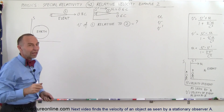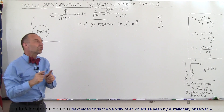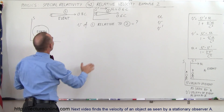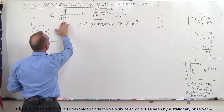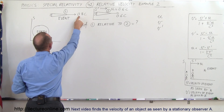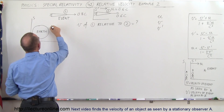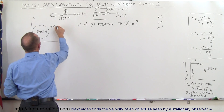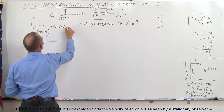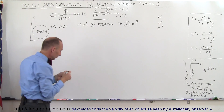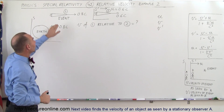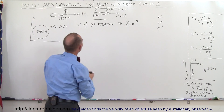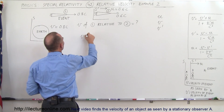V is the velocity of the event relative to the stationary reference frame. That would be Spaceship 1's speed relative to the Earth, so V is equal to 0.8C. This means we're looking for V', the velocity of the event as seen by the moving reference frame.